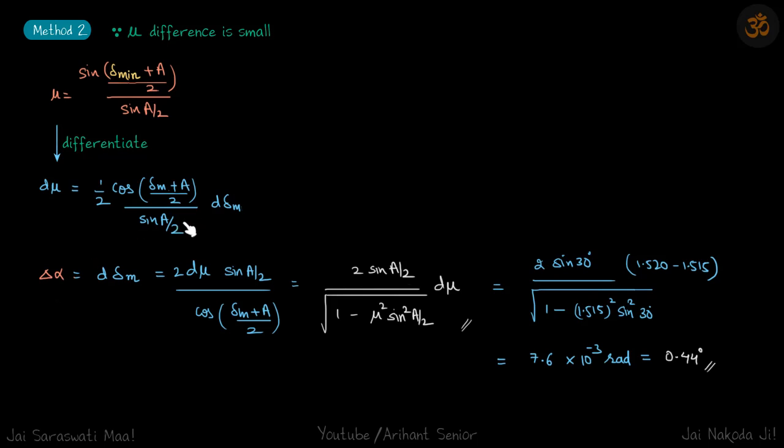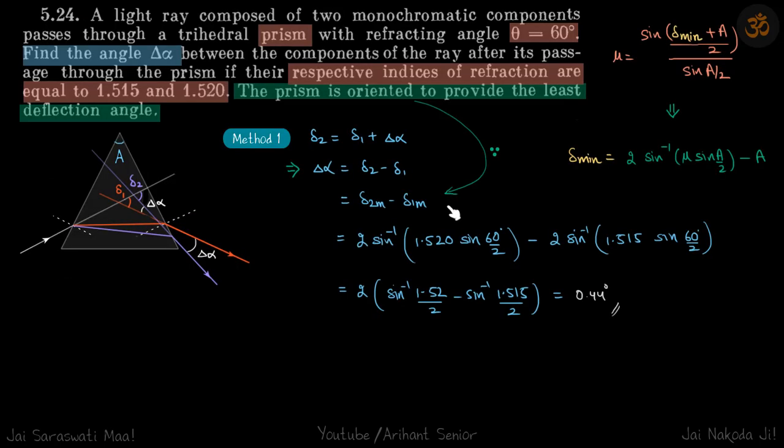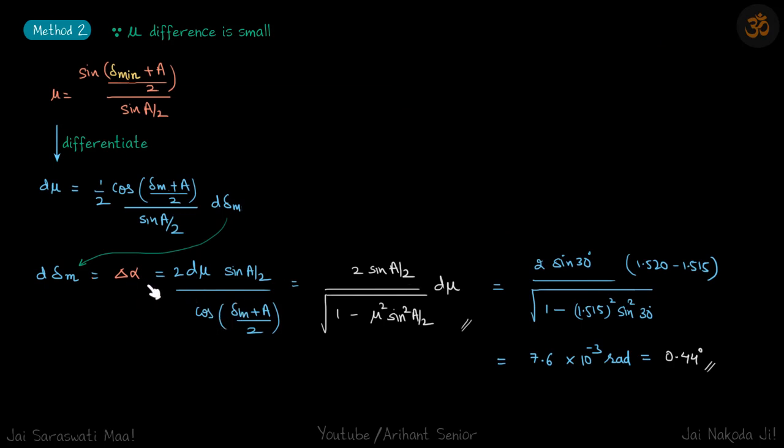And on the left side we have, so we'll take everything else on the left side. That will be two D mu sine A by two upon cos delta M plus A by two. I've just written it more clearly so it's easy to follow from this step to this step. So here D delta M, which we know is delta alpha, is equal to just rearrange this and we get this.